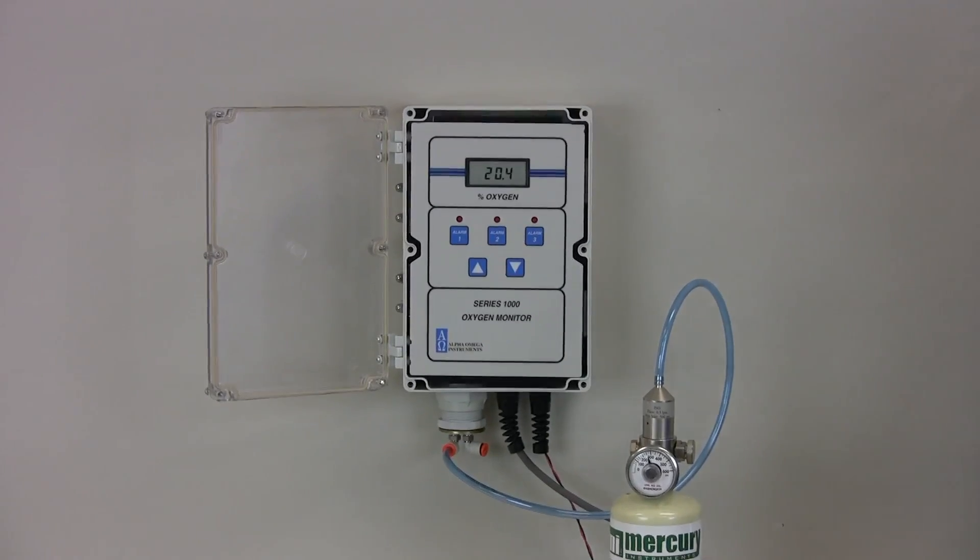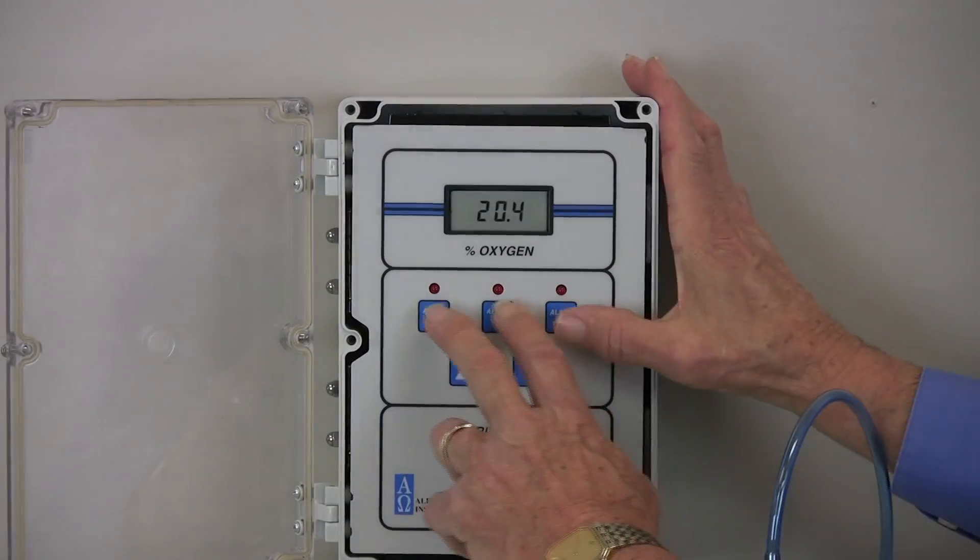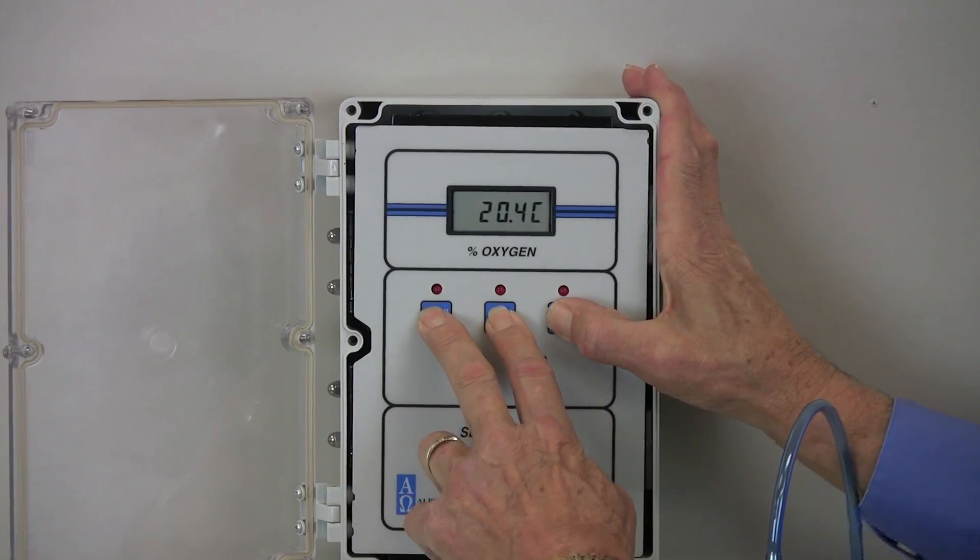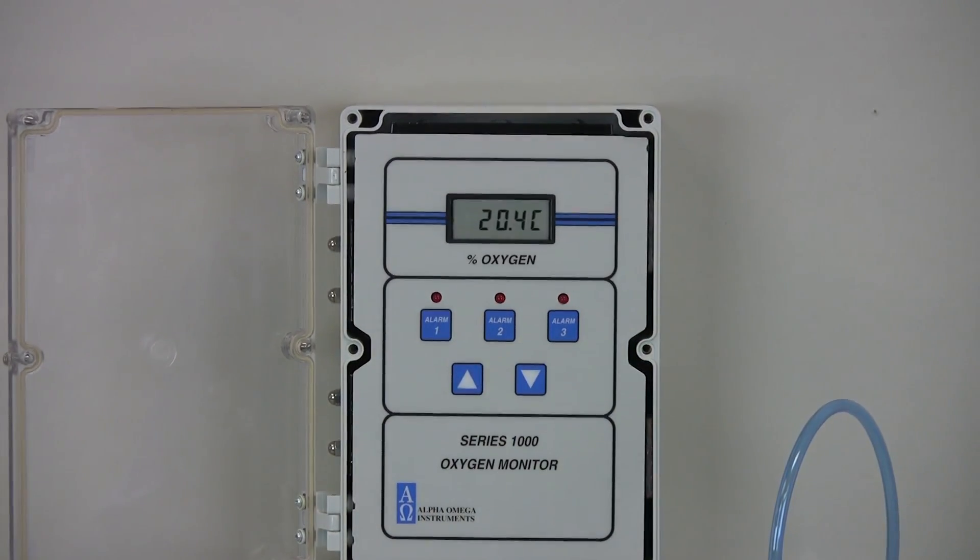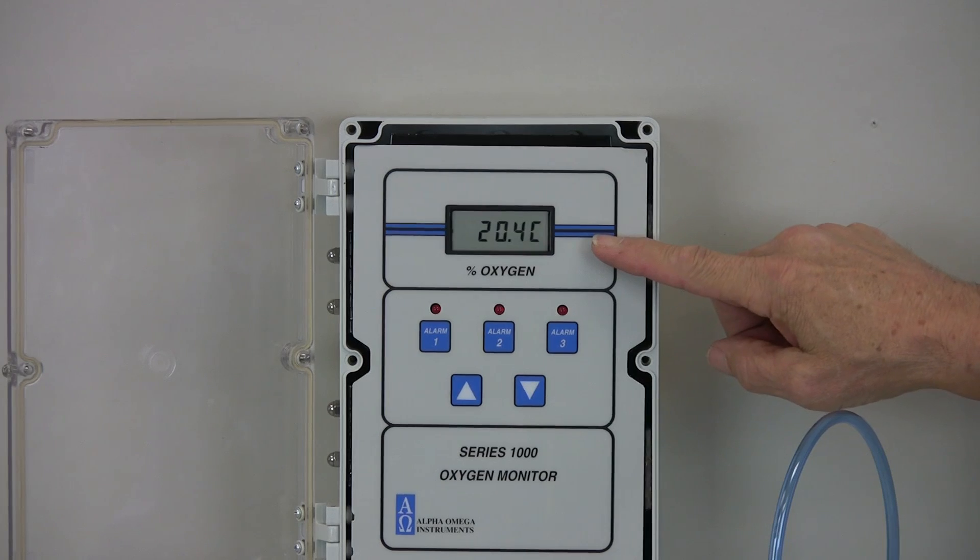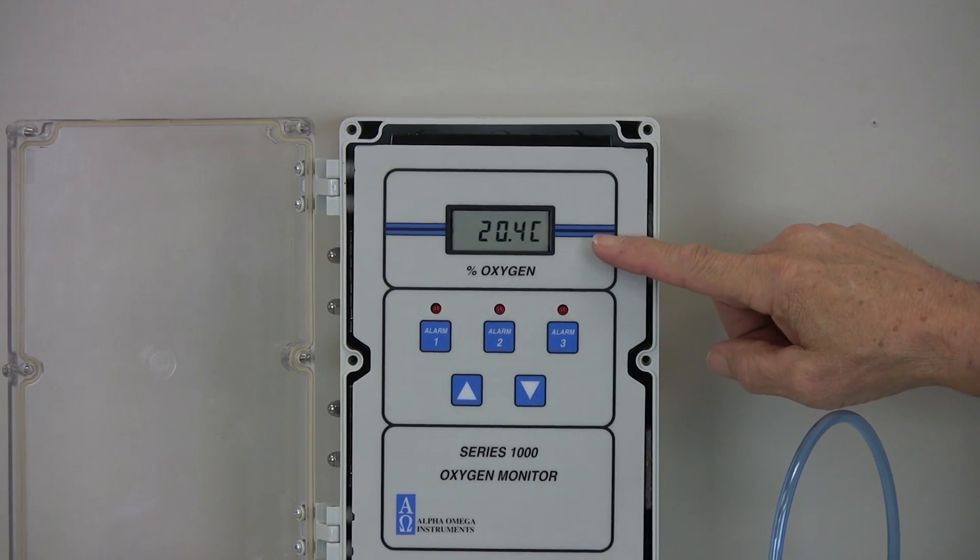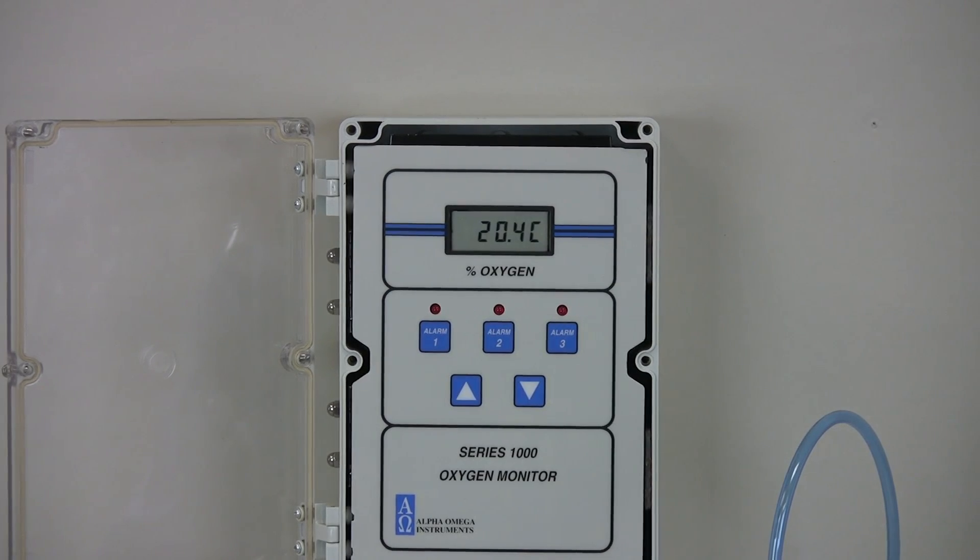To begin the process, first simultaneously press alarm buttons 1, 2, and 3. The digital readout display will continue to show the oxygen value and will add the letter C in the rightmost location of the display. This means that the instrument is in calibration mode.